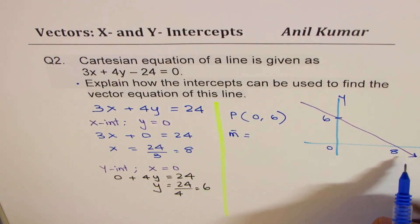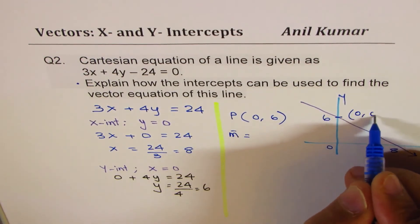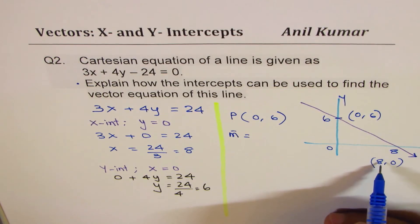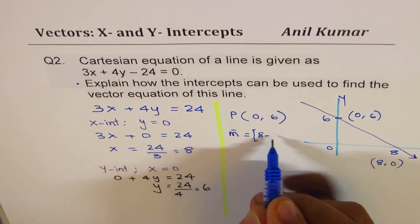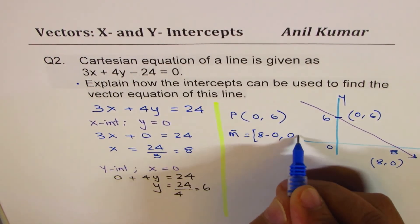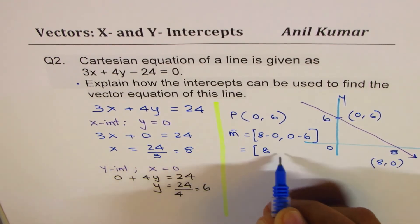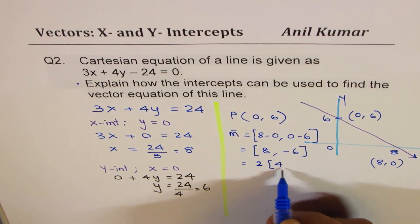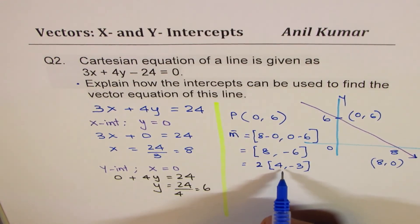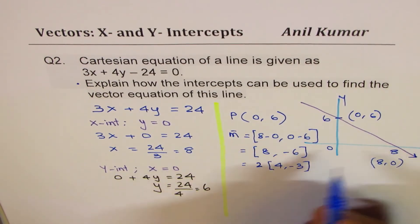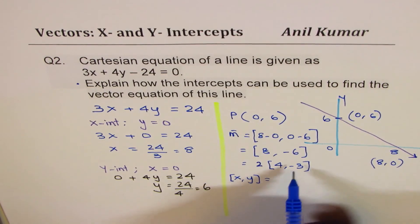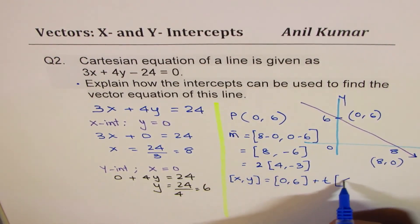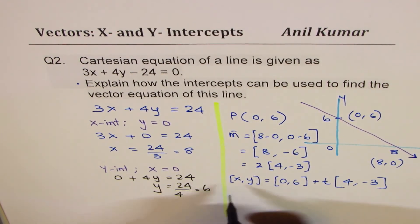The direction M is found from the two intercept points: change in x is 8 minus 0 equals 8, and change in y is 0 minus 6 equals minus 6. Taking common factor 2, the direction simplifies to (4, -3). So the vector equation of the line can be written as (0, 6) plus t times (4, -3).